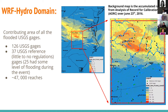The resulting domain is a densely gauged location — a very good test case. We have more than 100 streamflow observation locations reporting at hourly or sub-hourly intervals. Of those, 37 are reference gauges with minimal regulation from reservoirs or lakes upstream, and 25 of those got flooded.